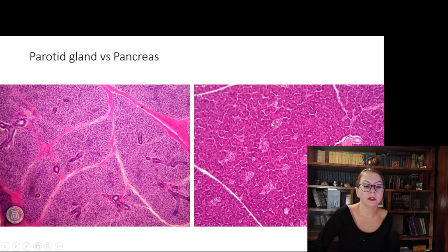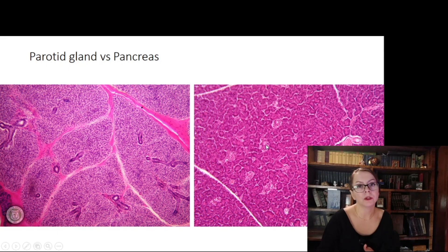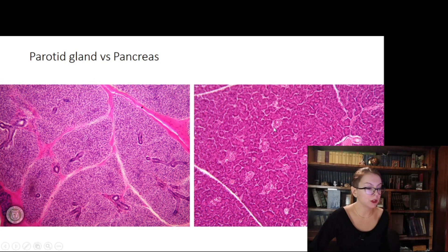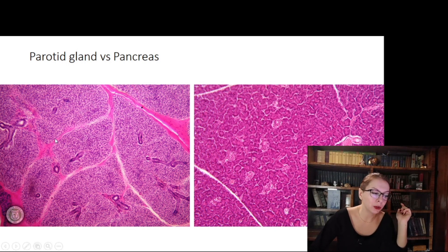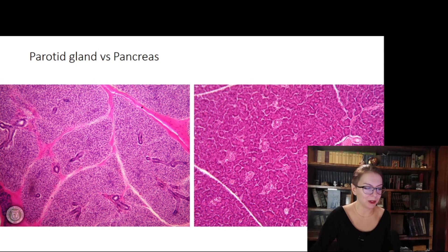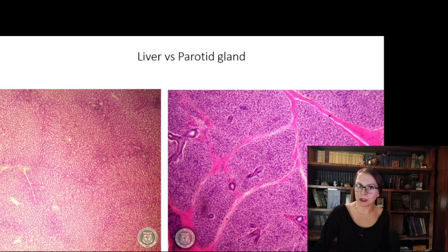The second criterion is the presence of islets of Langerhans. These are more pale compared with the exocrine part of the pancreas. If you can distinguish them, this is a criterion for the pancreas, as the endocrine portion is absent in the parotid gland. However, in some regions of the pancreas the islets may be absent, so this criterion is less reliable than the striated ducts. Also note that connective tissue is much more developed in the parotid gland than in the pancreas, where it is almost absent.